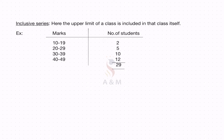Next is the inclusive series. Here, the upper limit of a class is included in that class itself. For example, 10 to 19, 20 to 29. The student whose marks is 19 is included in the same class — that is 10 to 19. Likewise, the student whose marks is 29 is included in the same class, that is 20 to 29, and this is the frequency given.